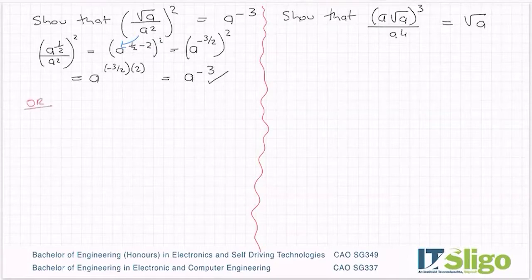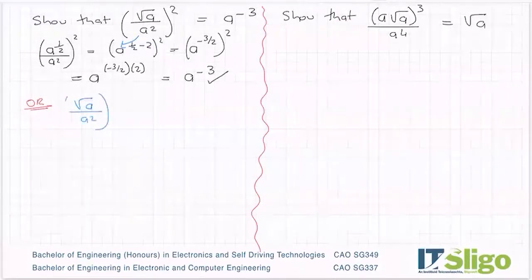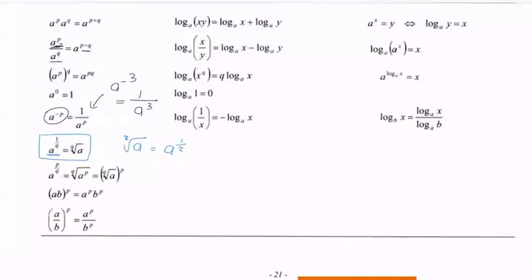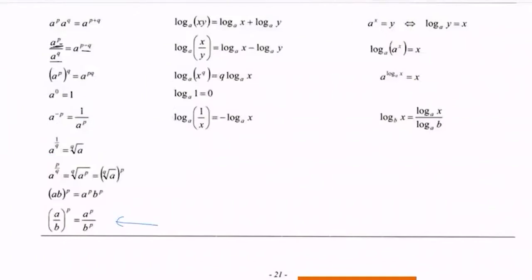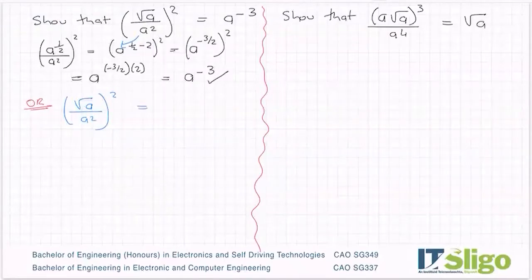Maybe you would prefer to get rid of the squared on the outside first. So let's have a look at that — I'll do this one in blue — where you're doing the squared on the outside. Basically you are using the rule at the bottom, where it tells you: a bracket to the power of p, you power the top and you power the bottom. In our case it's square the top and square the bottom. So that's the same as root a squared over a squared squared.